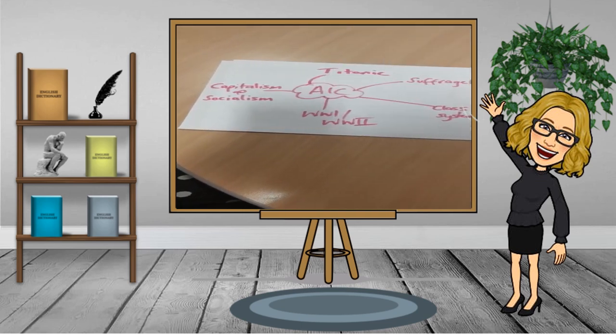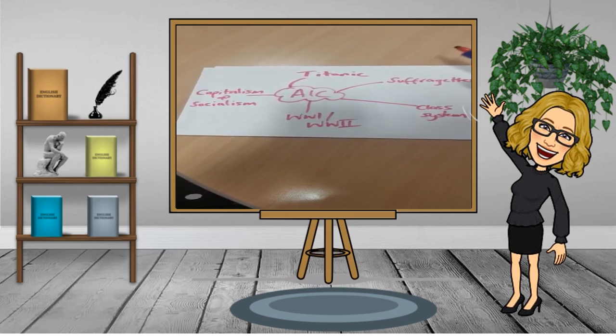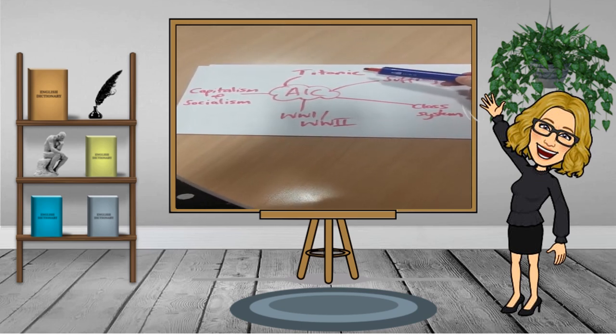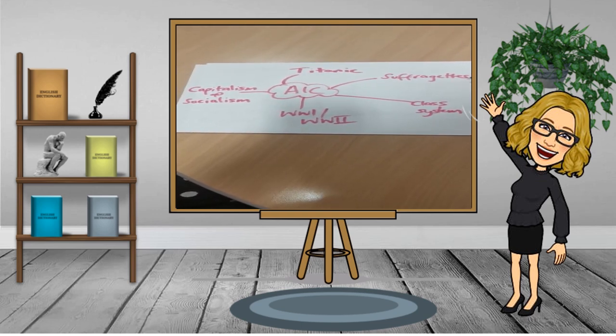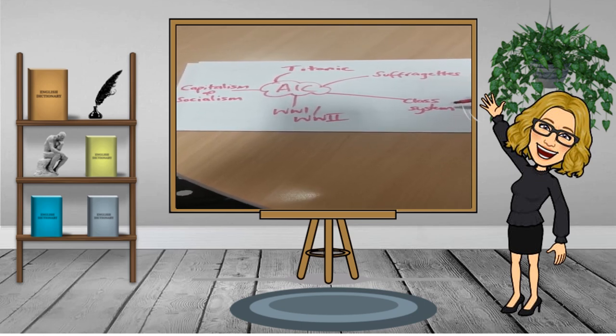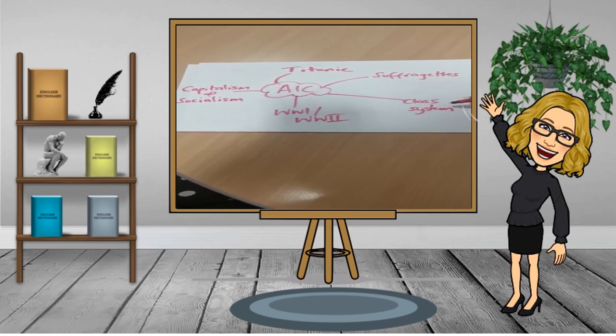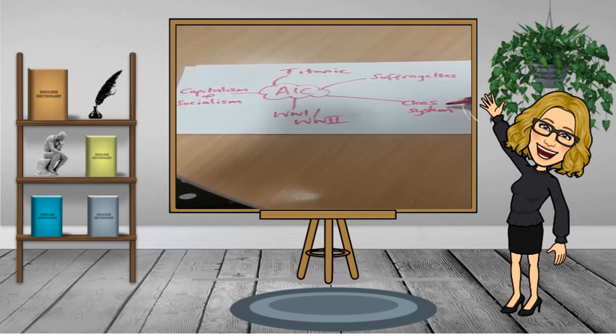First, when we think about the context of An Inspector Calls, that was at the time the Titanic sank. The suffragette movement was in full effect, gaining the right for women to vote. There were clear differences in the class system - the working class and upper classes - with clear divisions between those systems in society.